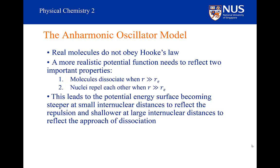Remember that the harmonic oscillator also implies that the nuclei go through each other, which doesn't make any sense. Therefore, the potential energy surface that we really want is one that becomes steeper at small internuclear distances but becomes shallower at larger internuclear distances, and those properties are to reflect repulsion and dissociation.